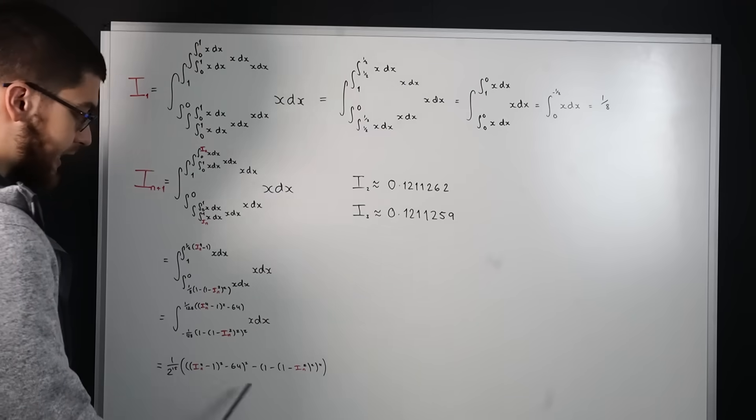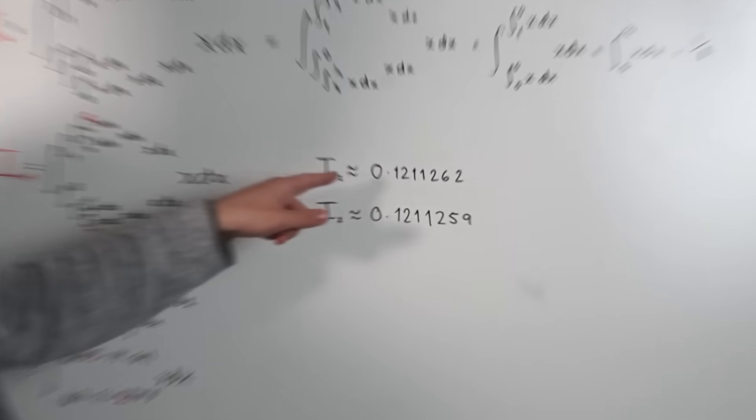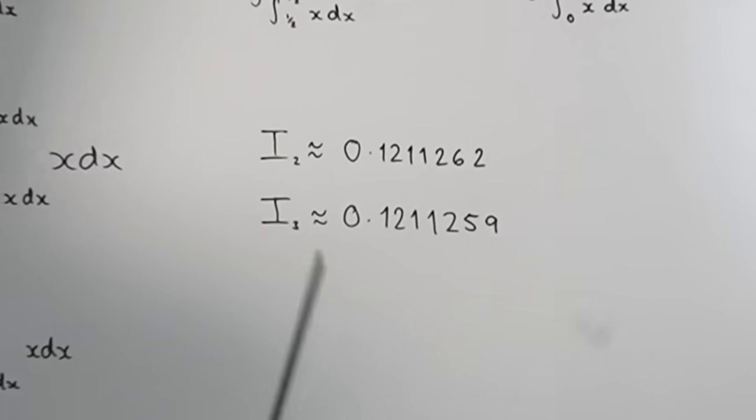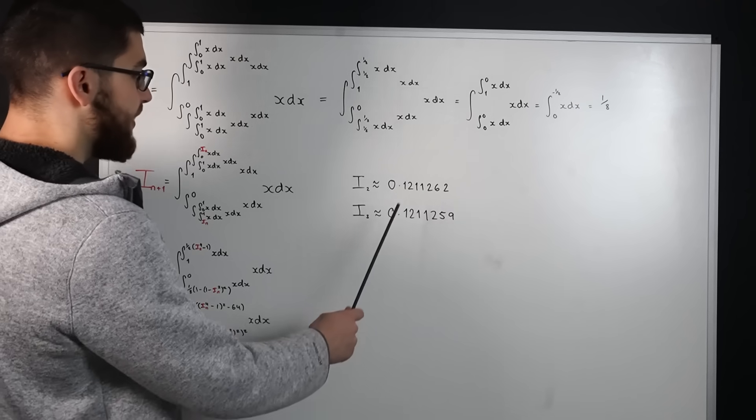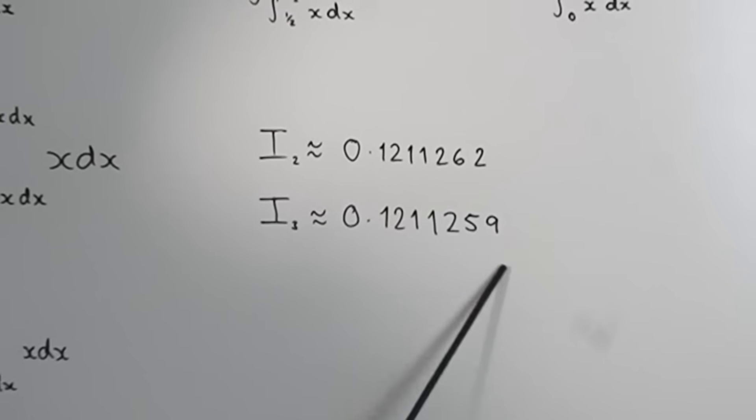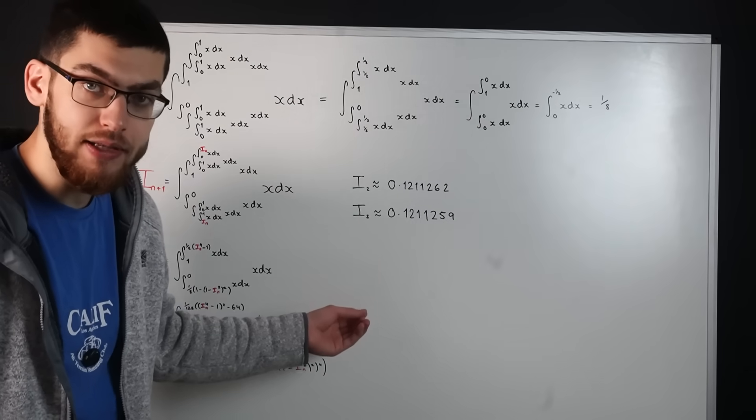So if you plug the one eighth in here then using a calculator you end up with 0.1211262 and then if you plug it in again you end up with 0.1211259. So as you can see it's converging very rapidly.